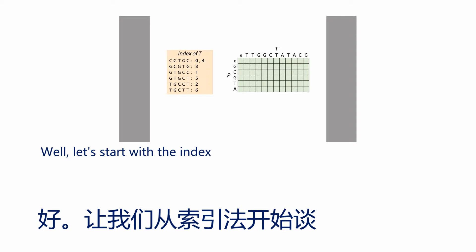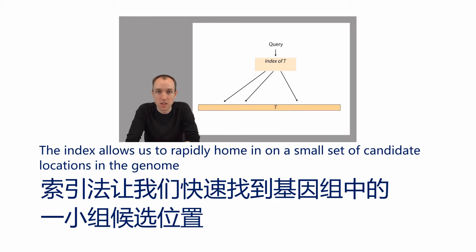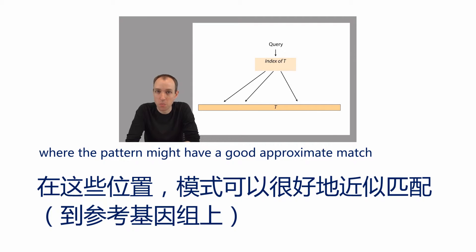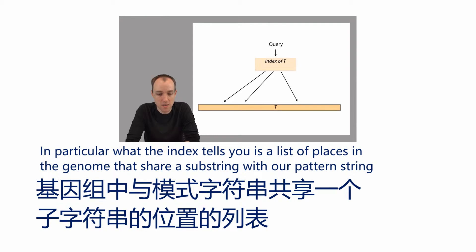Why do I say that? Let's start with the index. The index allows us to rapidly home in on a small set of candidate locations in the genome where the pattern might have a good approximate match. In particular, what the index tells you is a list of places in the genome that share a substring with our pattern string.